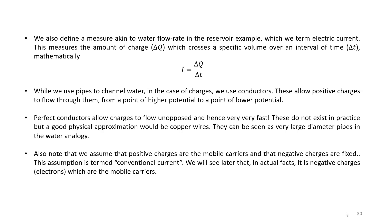While we use pipes to channel water, in the case of charges we use conductors. These allow positive charges to flow through them from a point of higher voltage to a point of lower voltage. We must point out that although we are assuming that positive charges are the mobile carriers that make up the current, in actual fact they are not, and it is negative charges that make up our current. However, we have been using and we will continue to use consistently the conventional current model, which is based on the assumption that the current is the rate of flow of positive charges.